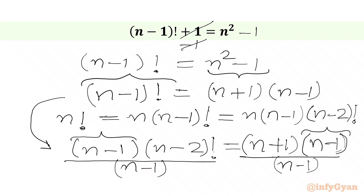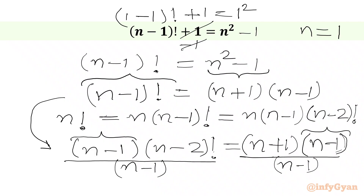So I am going to check our original equation for what happens when n equals 1. Putting n equal to 1: LHS becomes (1 minus 1) factorial plus 1, which is 0 factorial plus 1. RHS is 1 squared, which is 1. Since 0 factorial is 1, LHS gives 1 plus 1 equals 2. So 2 equals 1? No, it is not true. So for our equation, n cannot be 1.